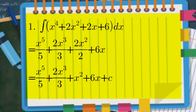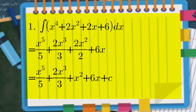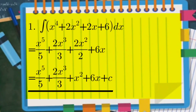So our final answer is: x to the power of five over five, plus two x cubed over three, plus x squared — because we cancel the two over two — plus six x, and we add the constant C. This is the final answer for example number one.